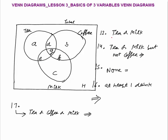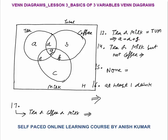Tea or milk simply means tea union milk — whatever is there in the circle of tea as well as milk will be included. So that equals A plus D plus G plus E plus F plus C.